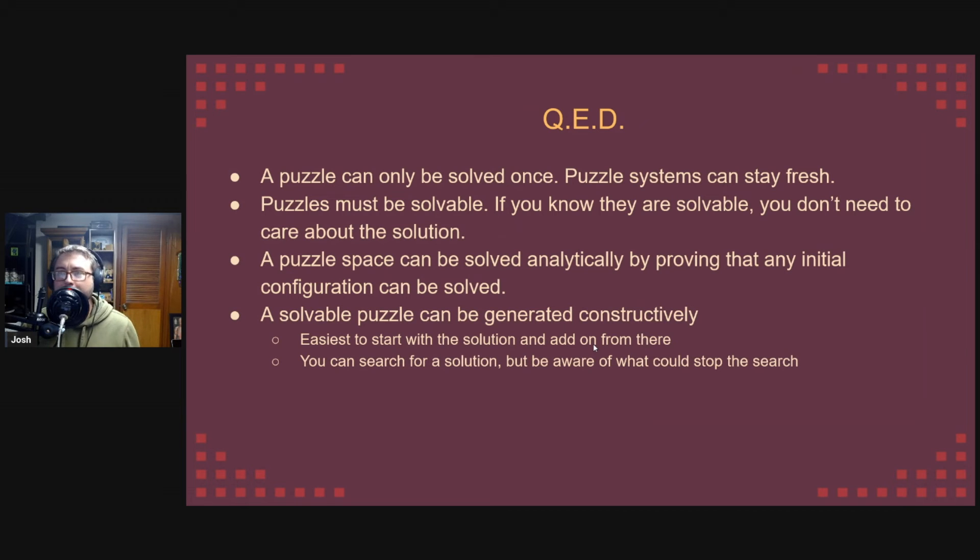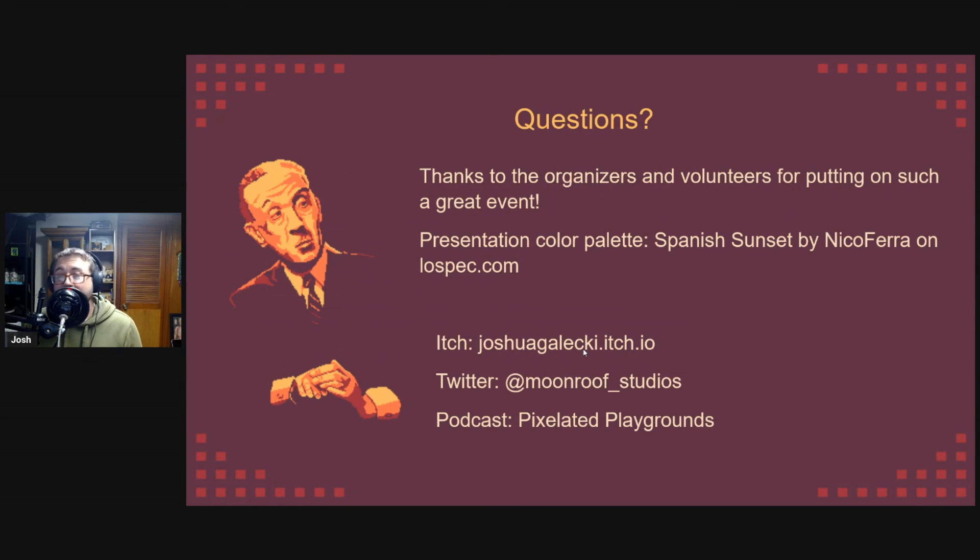So summing things up. Puzzles are great. I love them. Doing the same puzzle more than once is not so great. Puzzle systems let you give the player lots of variants on the same puzzle design and keep them interested. Of course, any puzzle you create needs to be solvable. If you know they can be solved, you can let the player do the hard work. Solving a puzzle space analytically means showing that any initial configuration of that puzzle can be solved. Generating a solvable puzzle constructively also guarantees a solution. When doing this, it's easiest to start off with a solution and then add red herrings, trap doors, or false paths. But it's also possible to build up to a solution. If so, like any other algorithm you make, you have to pay extra attention to the bugs. I'd like to thank the organizers for throwing an amazing conference. I'd like to thank you all for coming and listening to my talk. I have a couple of places you could follow me here and I'm ready for any questions.